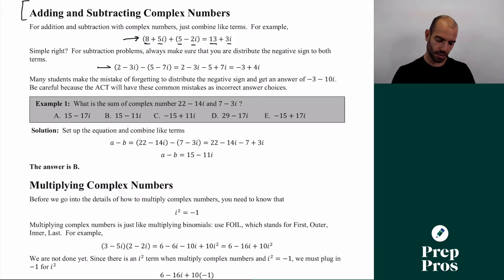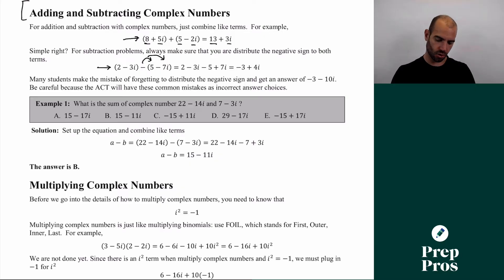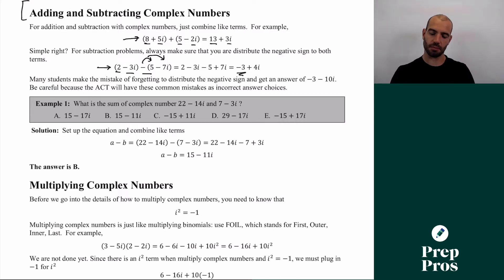For subtraction, same concept. If we have 2 − 3i − (5 − 7i), we just need to make sure we distribute the negative to both terms. So it's 2 and then just numbers: 2 − 5 = −3, and then −3i − (−7i) turns into +7i, which gives us positive 4i. So our answer is −3 + 4i. Questions like these are fairly simple and straightforward.